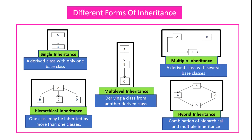Hierarchical inheritance: one class may be inherited by more than one class, that is, you can have more than one child of a single base class. In this example, A is the base class and B, C, and D are child classes derived from base class A.